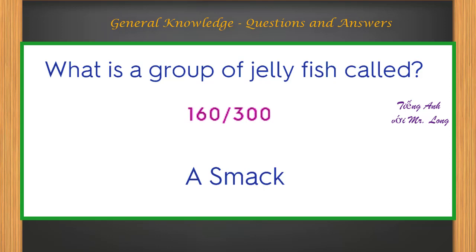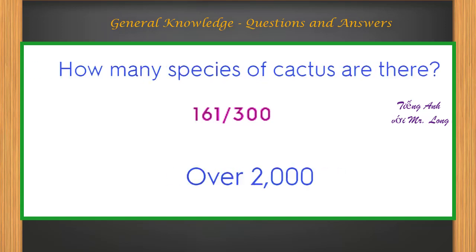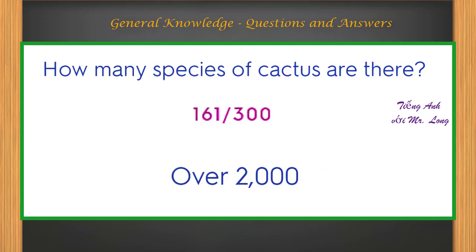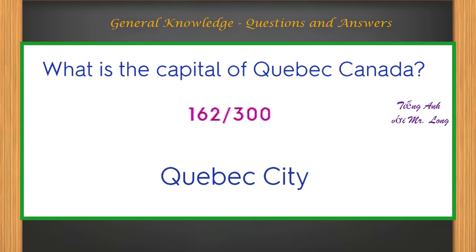What is a group of jellyfish called? A smack. How many species of cactus are there? Over two thousand. What is the capital of Quebec, Canada? Quebec City.